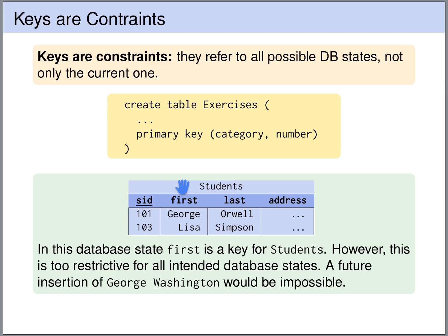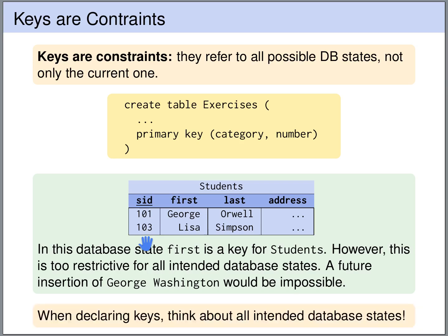If you have a table with no obvious key choice — no good attribute combination that uniquely identifies rows, or only attributes that might be updated — it is a good idea to create an artificial ID, just as in the students table. Add an artificial column that serves as a simple counter: 0, 1, 2, 3, and so on. This counter uniquely identifies the rows in the table. When declaring keys, always think about all possible future database states and whether key values could be updated.